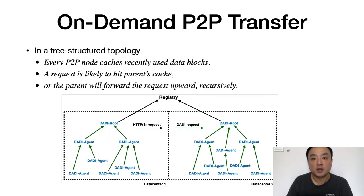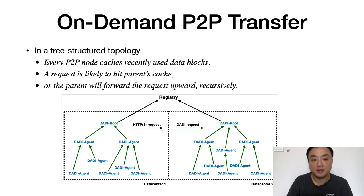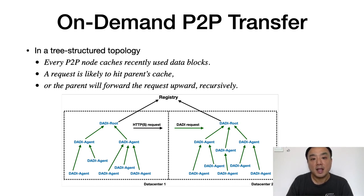The tree-structured topology is maintained dynamically by the root node for each layer blob separately. Every node caches recently accessed data blocks so that they have data to serve other nodes. When a node needs to read data, it simply sends a request to its parent node, and the request is likely to hit the parent's cache. In case of cache miss, the parent will forward the request upward recursively until it is fulfilled.